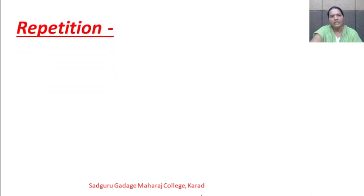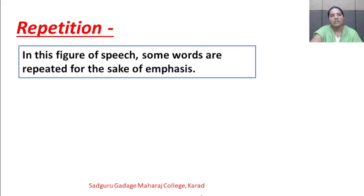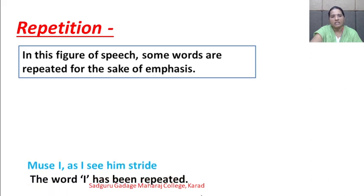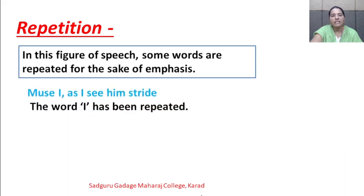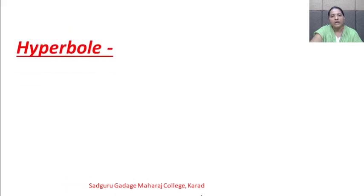The next poetic device is repetition. In this figure of speech, some words are repeated for the sake of emphasis. Example of repetition: 'Muse I as I see him stride' — the word 'I' has been repeated.